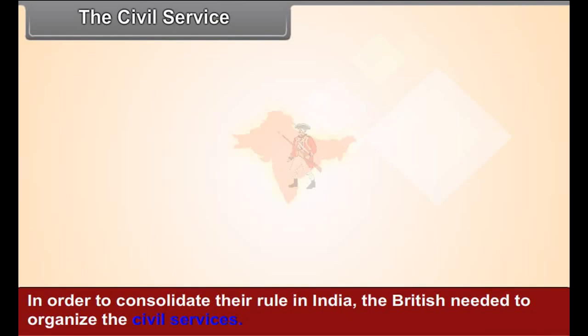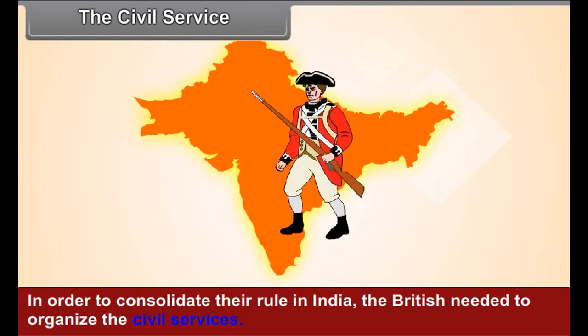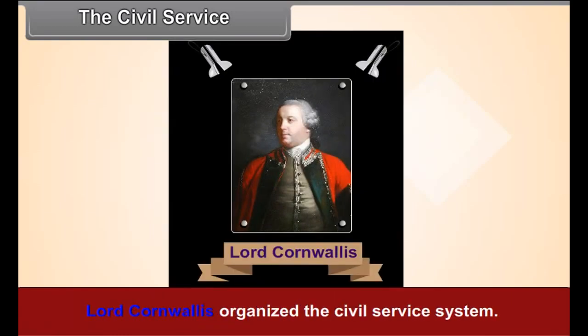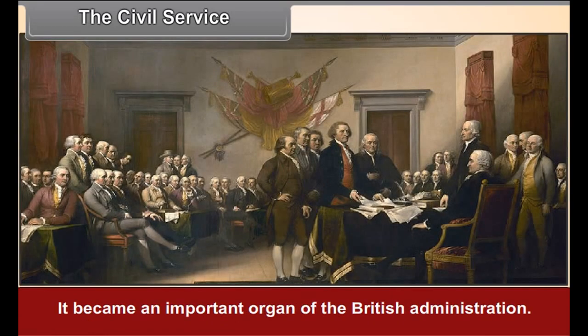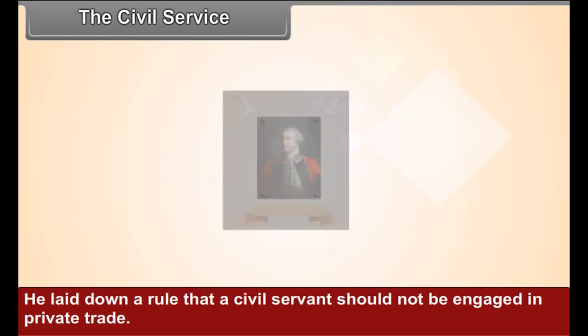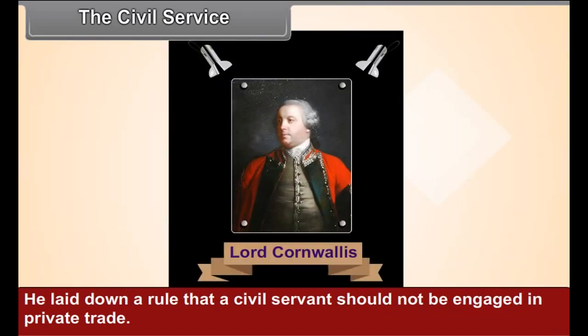The civil service. In order to consolidate their rule in India, the British needed to organize the civil services. Lord Cornwallis organized the civil service system. It became an important organ of the British administration. He laid down a rule that a civil servant should not be engaged in private trade.